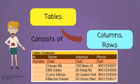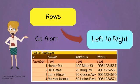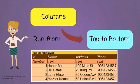A table consists of columns and rows. Rows go from left to right. Columns run from top to bottom.